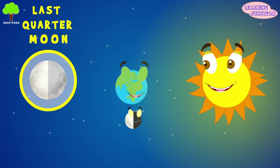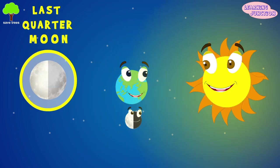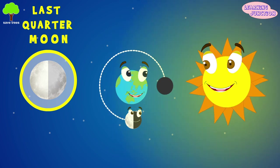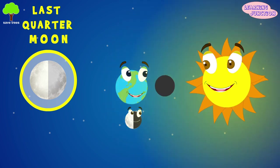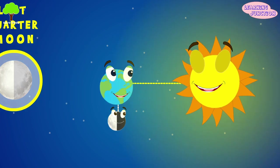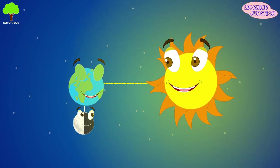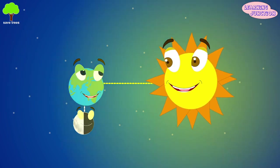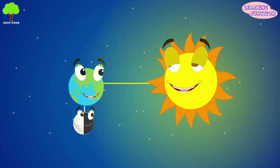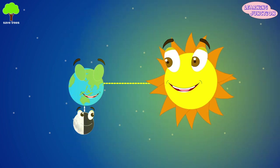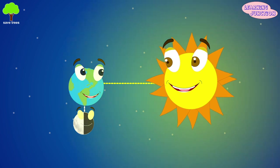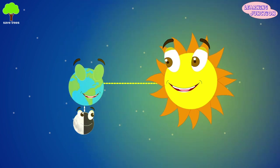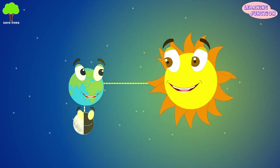Last quarter moon. The last quarter is when the moon has completed three quarters of an orbit around our Earth — 90 degrees away from the sun. Half of the moon's surface is visible from Earth, so some people call it the half moon. The last quarter moon shows the sunlit side of the moon on the left. It rises around midnight and sets around mid-morning.